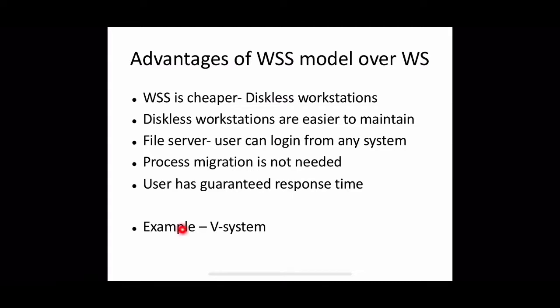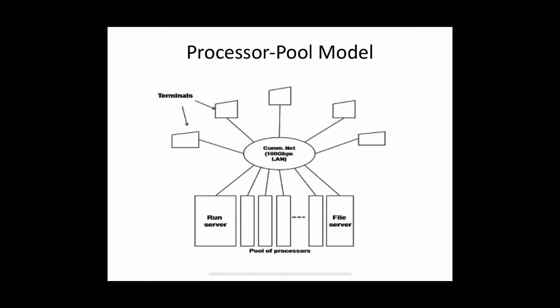An example of this type of distributed computing system is the V-System. The next model is the Processor Pool Model. This model is based on the observation that most of the time a user does not need much computing power, but once in a while may need a very large amount for a short time. Unlike the workstation server model where a processor is allocated to each user, in the processor pool model the processors are pooled together and shared by users as needed.